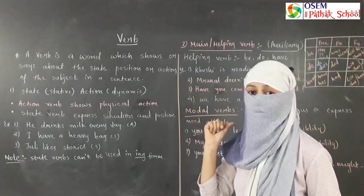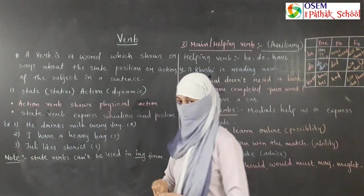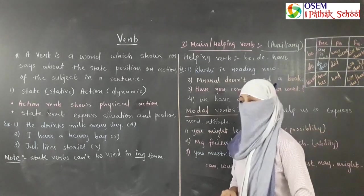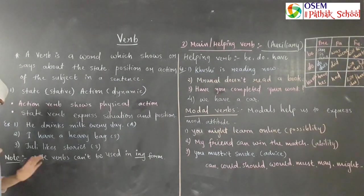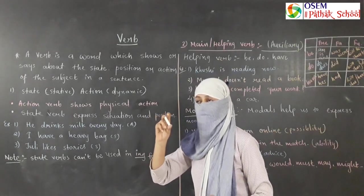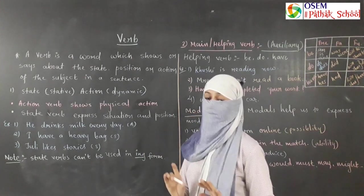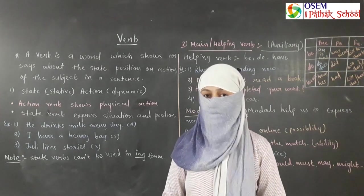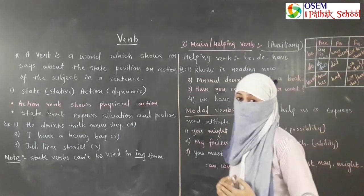'He drinks tea' — you can observe the drinking, so it shows a physical action and is called an action verb. A state verb, on the other hand, expresses a situation or position — you cannot see a physical action. For example, 'I have a chalk' — you cannot see any action, but you can see the verb 'have.' 'I am a teacher' shows a position, so 'am' is a state verb.